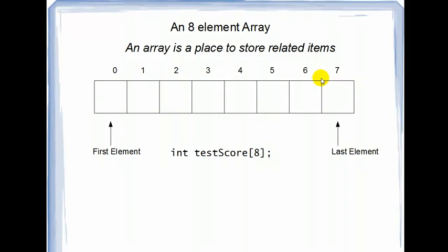So element seven would be the last element here. And that would also hold an integer. So now you've got an area blocked out in memory where you can save your eight students test scores.